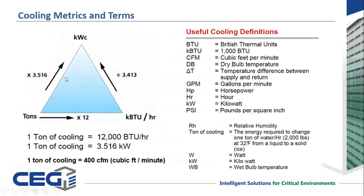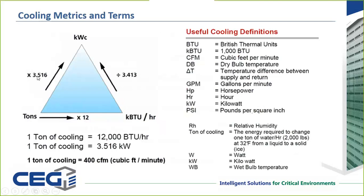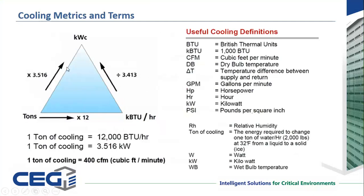But looking back at the triangle, what's most important is taking tons to kilowatts, which is a multiplication of 3.516. I always kidded our sales reps that you need to memorize your 3.5 times tables. Because when you get into a data center and someone says, 'I have a 30-ton air conditioning unit,' you can quickly do 30 times 3.5 and figure out how many kilowatts of cooling that air conditioner is rated for. Then things start to make sense when they talk about how much IT load they have in the space.